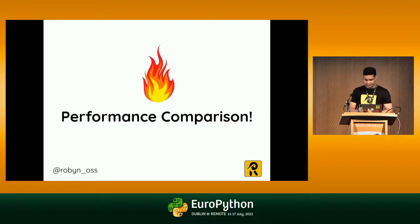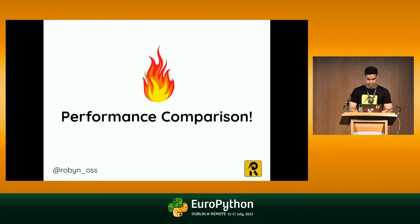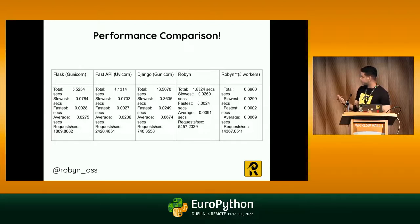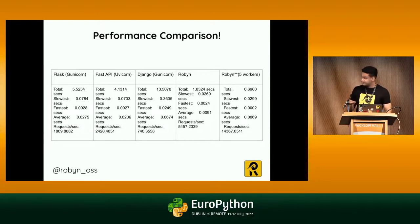For the performance comparison — this is not to demean any framework, as these frameworks are the reason I got involved in the Python ecosystem. Flask took around 5 seconds to serve 10,000 requests, FastAPI took 4 seconds, Django with Gunicorn took 13 seconds. Robin on a single worker took 1.8 seconds, whereas with five workers — the maximum allocatable on my dual-core machine — it took only 0.69 seconds to serve 10,000 requests.